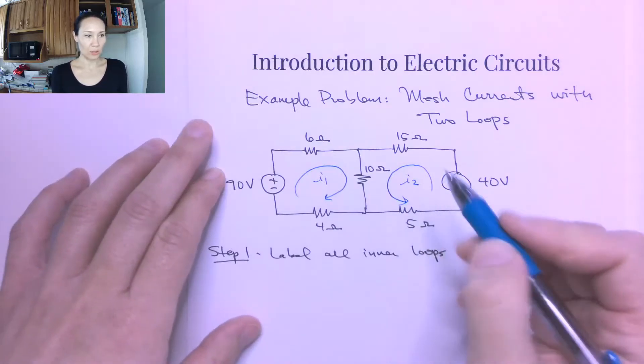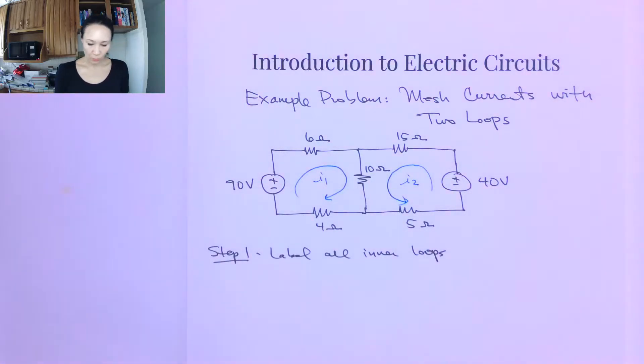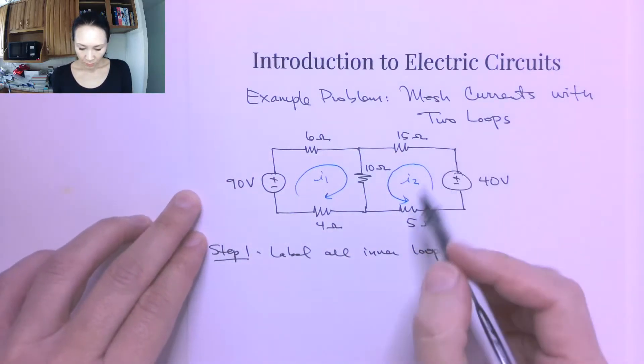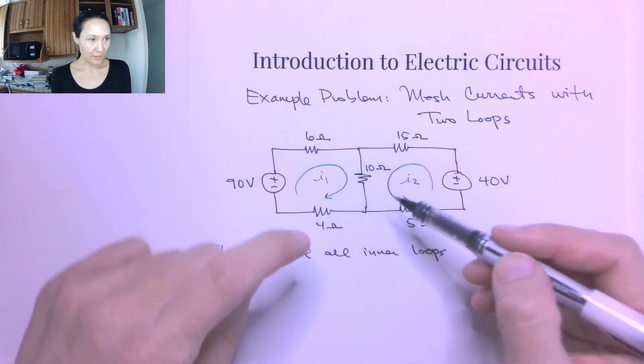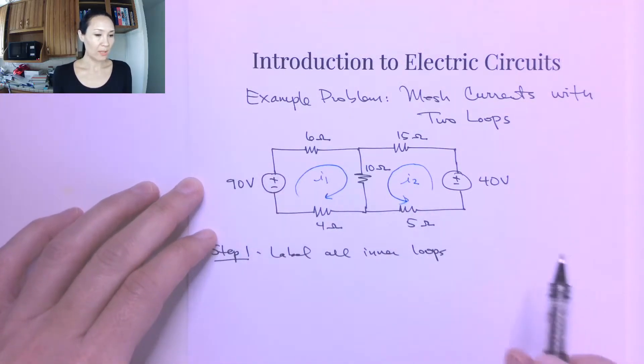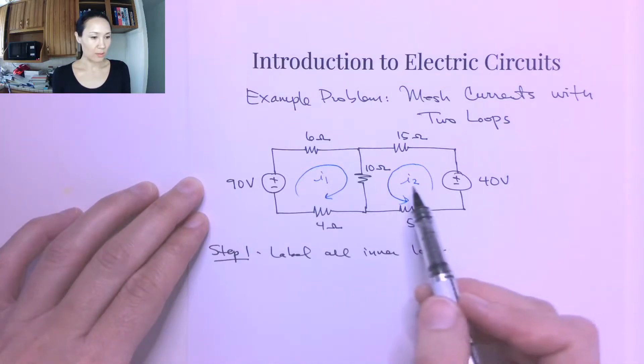And then just for something different, I'm going to label this I2, but I'll have it going in the opposite direction. So you can see how those mesh and what happens when currents are going in the same direction through that middle resistor. Okay, great. So I've labeled all of my loops. This is loop I1, loop I2.